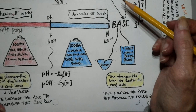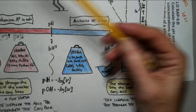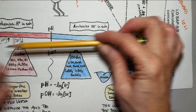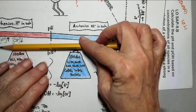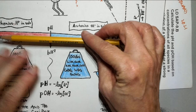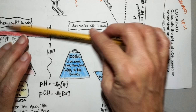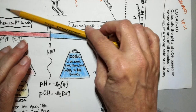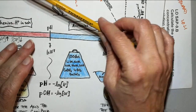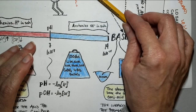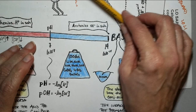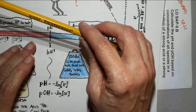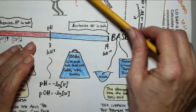Arrhenius came up with a simplified definition, and then you had to pick up a better definition — that's where the Bronsted-Lowry definition comes in. So we have bases as acceptors and acids as donors.